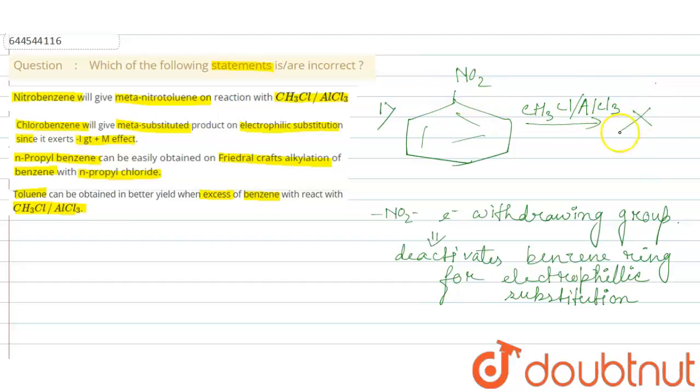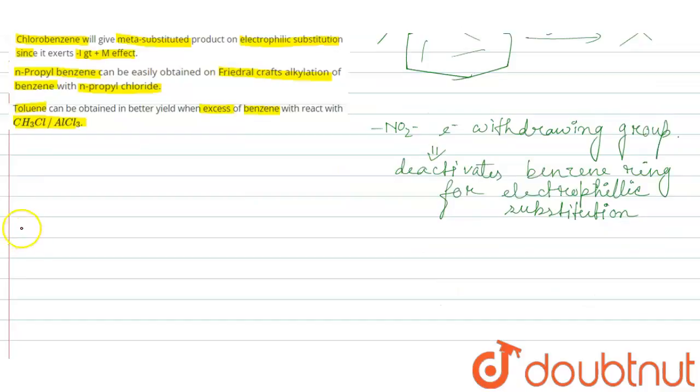Now if we come to option number two or statement two, chlorobenzene will give meta-substituted product on electrophilic substitution. Suppose we have some electrophile E plus. It will give meta-substituted product since it exerts minus I greater than plus M effect.